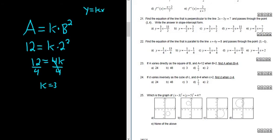Okay, so now you take the K and you plug it back into your equation. So we end up with A equals 3B squared.